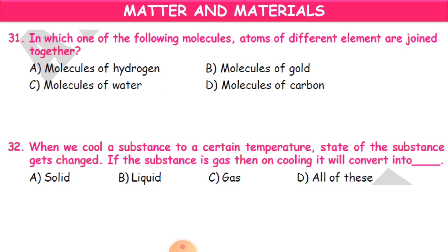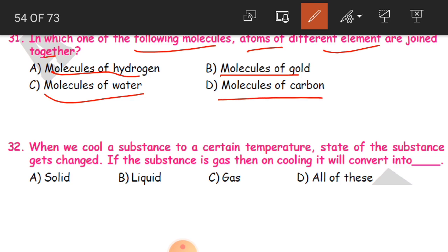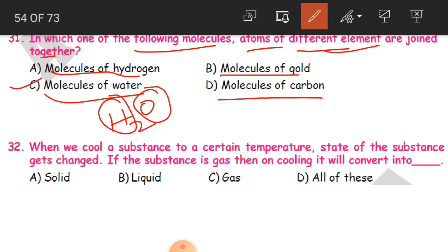Question 31: In which one of the following are atoms of different elements joined together? Is it molecules of hydrogen, molecules of gold, molecules of water, or molecules of carbon dioxide? The answer is molecules of water, because water is H2O — that is two hydrogen and one oxygen. So we have two different atoms of different elements: hydrogen is one element, oxygen is one element.